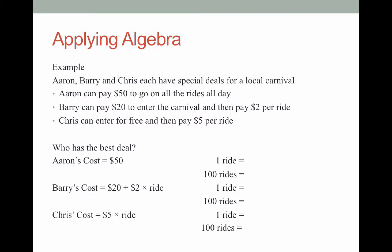So let's take a look at Aaron. Aaron's cost will be $50 no matter how many rides he takes. So one ride will cost him $50 but a hundred rides will also cost him $50. Barry's costs. Now if Barry takes one ride it will cost him $20 plus $2 for that ride. So it'll cost him $22. However if he takes a hundred rides then Barry's cost is going to be $20 plus two lots of a hundred. That's $220.